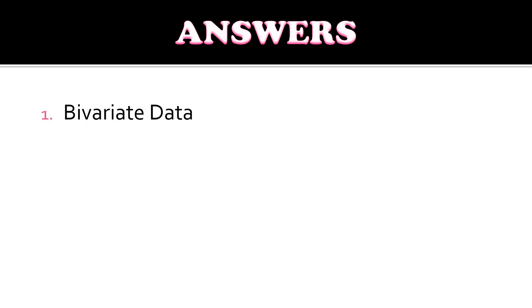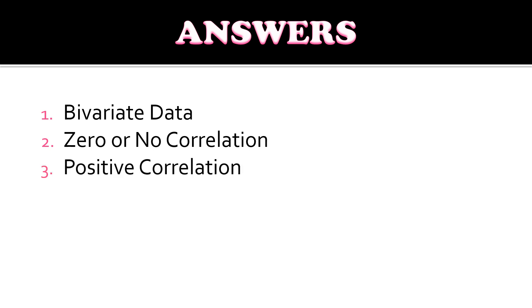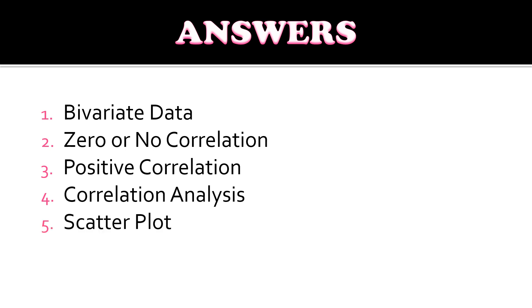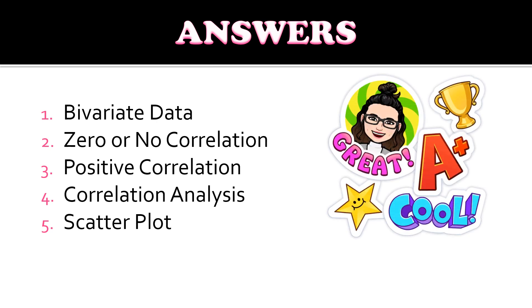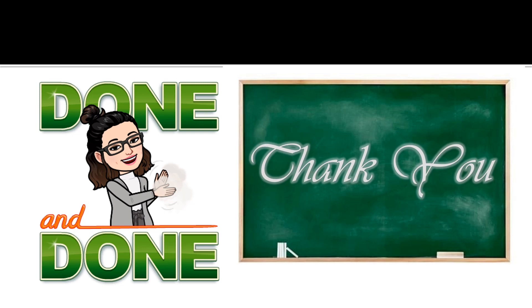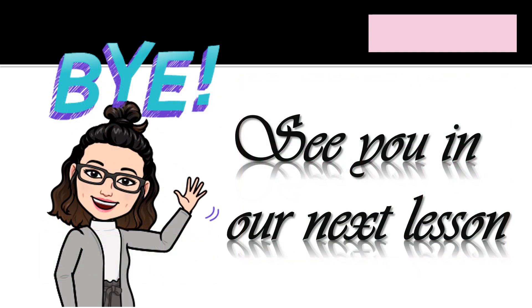Now let us check your answers. For number one, it's bivariate data. For number two, it's zero or no correlation. For number three, it's positive correlation. Number four, it's correlation analysis. And number five is scatterplot. I hope you got all the correct answers. And that's it for today. I hope you learned a lot. Thank you very much, and see you in our next lesson.